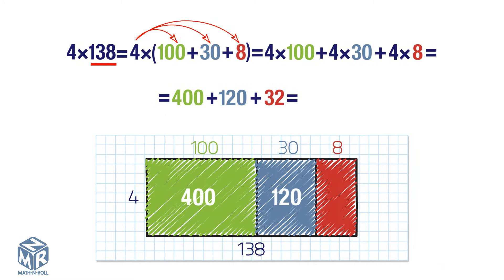Add the partial products and we have 552. So 4 times 138 equals 552.